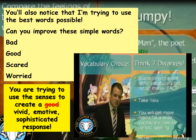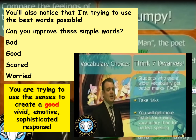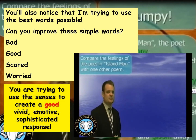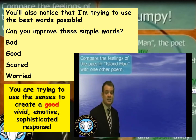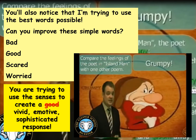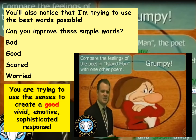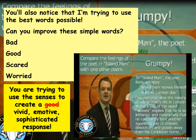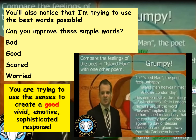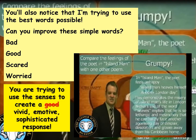The seven dwarfs. I'm going to show you examples from AQA GCSE papers to help build your vocabulary. A question from Paper 2 Section B on Poetry from Other Cultures: compare the feelings of the poet in Island Man with one other poet. Island Man is extremely grumpy. 'Island Man is grumpy' is not going to get a particularly good mark. So here's a paragraph: 'In Island Man, the poet feels unhappy. Island Man heaves himself into another London day. Nichols' use of the word heaves implies that he is so lethargic and melancholy that he can barely face another agonizing day of despair, desolation and gloom away from his Caribbean home.' All of this from that one word: grumpy.